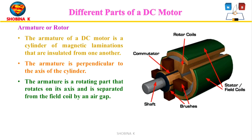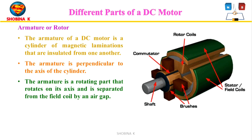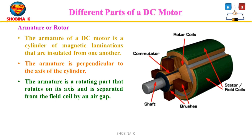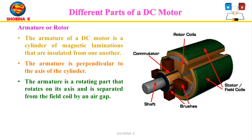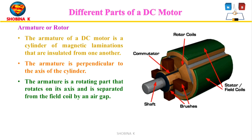In motors and generators the armature is the rotor and field is the stator. The armature of a DC motor is a cylinder of magnetic laminations that are insulated from one another, perpendicular to the axis of the cylinder. The armature is the rotating part which rotates on its axis, separated from the field coil by an air gap. The armature or rotor is the dynamic part of the motor used to create mechanical revolutions of the unit.